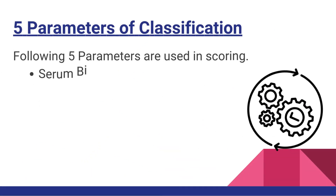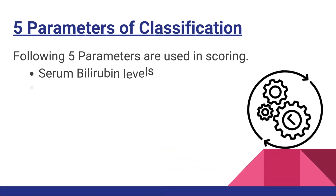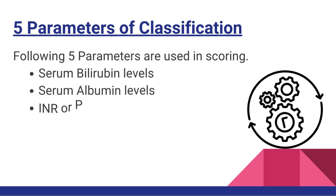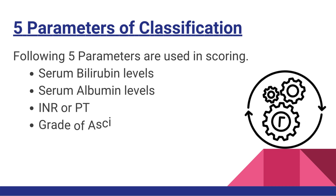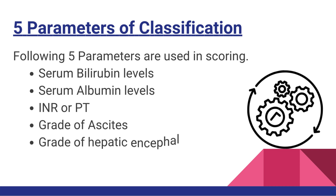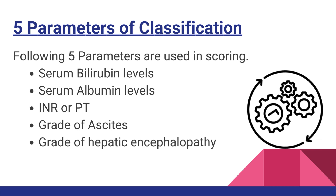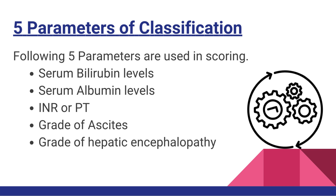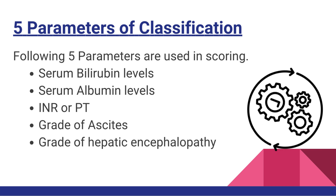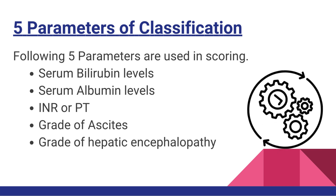The following five parameters are used in scoring: serum bilirubin levels, serum albumin levels, INR or PT, grade of ascites, and grade of hepatic encephalopathy.